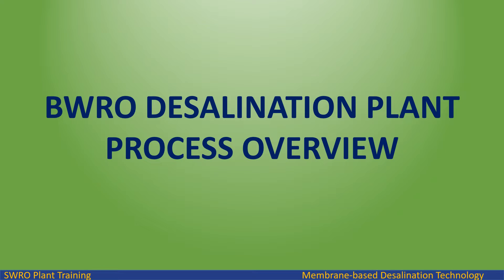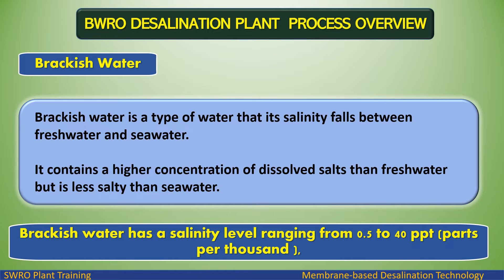In this presentation we will study about Brackish Water Reverse Osmosis (BWRO) Desalination Plant. Brackish water is a type of water whose salinity falls between fresh water and seawater. It contains a higher concentration of dissolved salts than fresh water but is less salty than seawater. Brackish water has a salinity level ranging from 0.5 to 40 ppt (parts per thousand).